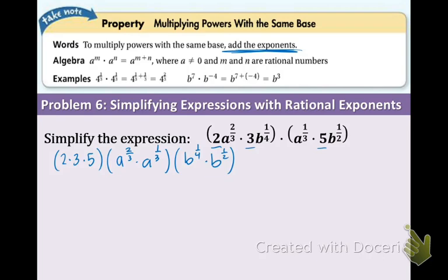Very good. We might as well multiply 2 times 3, which is 6, times 5 is 30, so bring down the 30. Remember, when you are going to multiply powers with the exact same base, you're going to add the exponents. So what we can do is have a to the 2 thirds plus 1 third, add the exponents, and also for the b, we're going to have b to the 1 fourth plus 1 half.